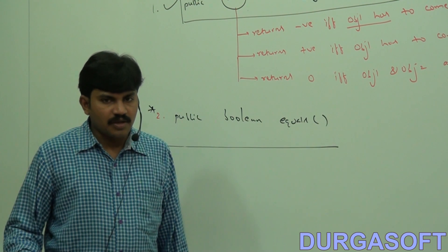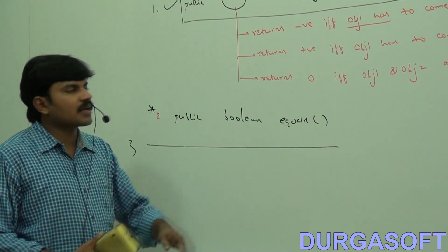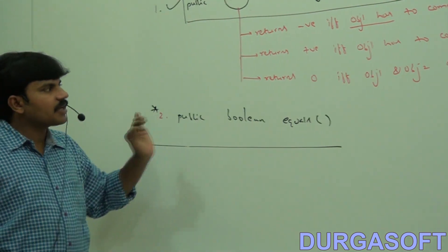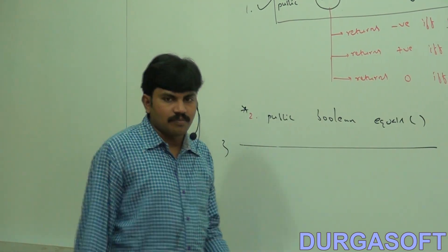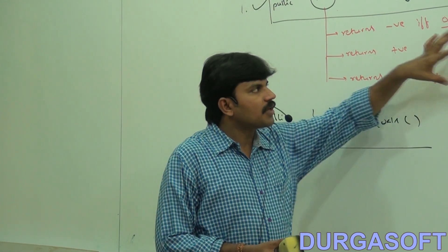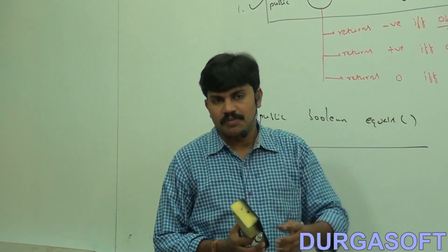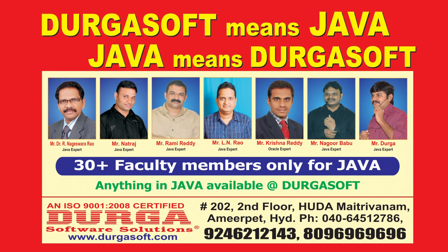So this is what Comparator is. Now let me convert this total discussion into an example form, so that you people can understand how we can implement Comparator to define our own customized sorting.